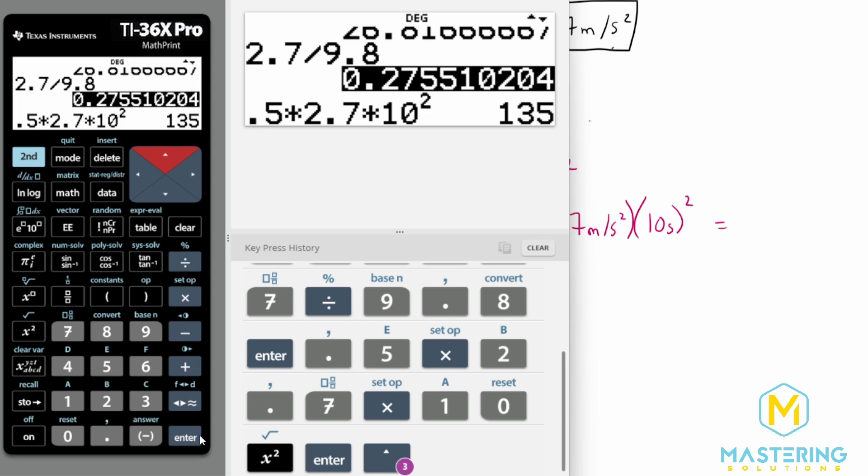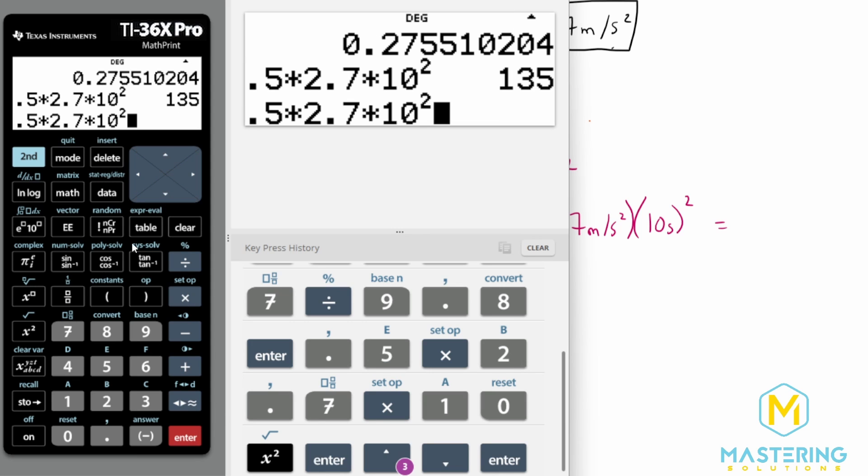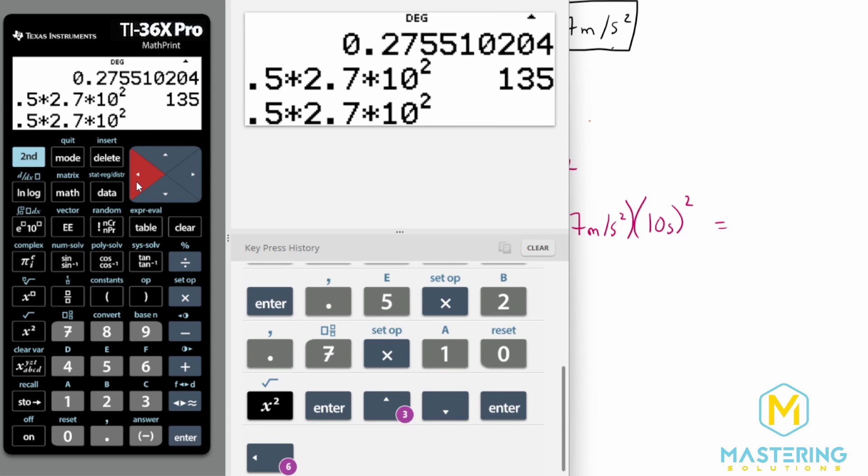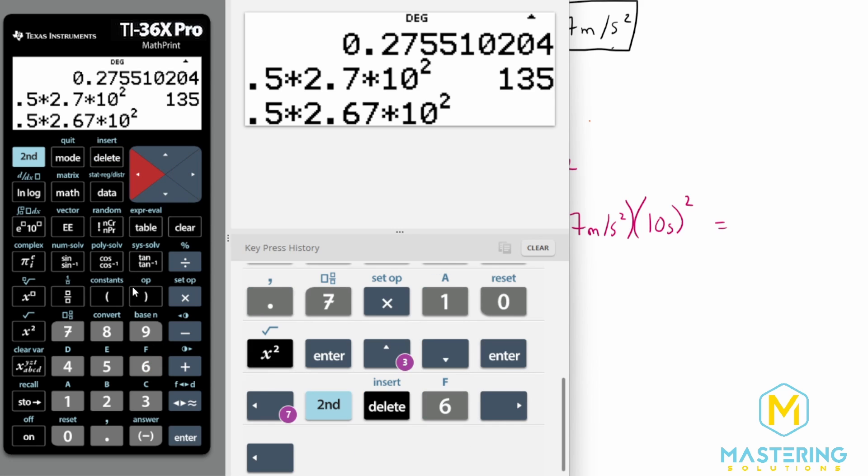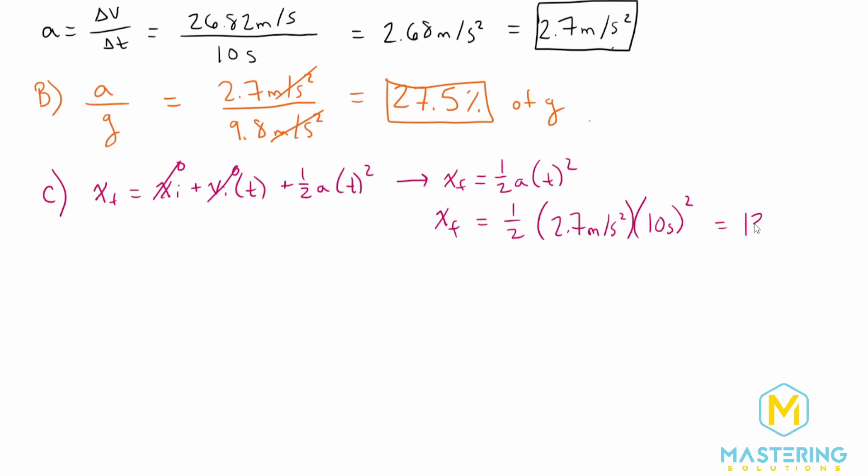So we have 135. I'm just curious if we used 2.68, 134. Yeah, very close, within margin of error, but we'll use the more precise one, 134. So it went in that 10 seconds 134 meters.